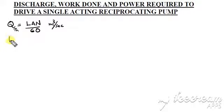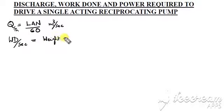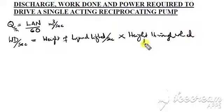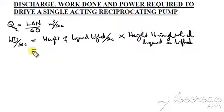In this session we will try to find out the work done by the pump per second. To find out the work done, we find the weight of liquid lifted per second multiplied by the total height through which the liquid is lifted. This is a very simple equation we study from school classes.